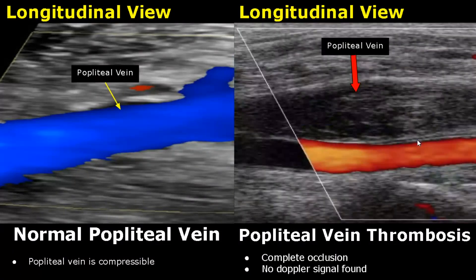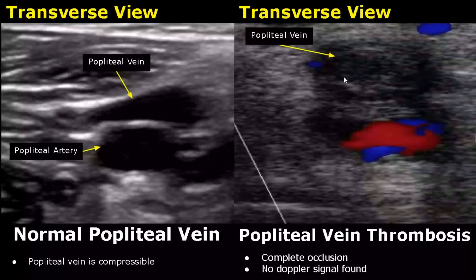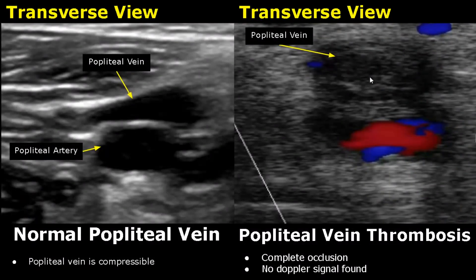Complete occlusion is seen in this image due to thrombosis. There is no Doppler signal found in this selected region of the popliteal vein. Here is a transverse view showing complete occlusion in the popliteal vein — no Doppler signal is found.